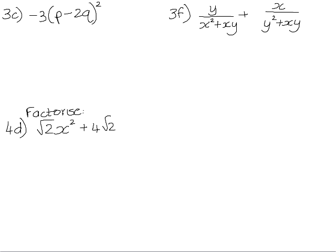Question 3c, again we need to follow our order of operations. We have brackets being raised to an exponent, so that needs to happen before we do the distributive law or multiply the negative 3. Squaring a bracket, we'll have P times P, which is P squared. The outers and the inners will both be negative 2PQ, so altogether we'll have negative 4PQ. And then negative 2Q times negative 2Q is positive 4Q squared.